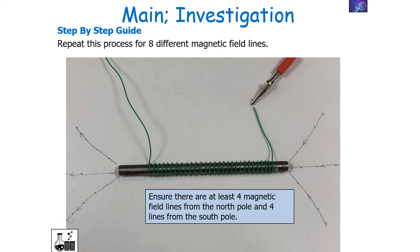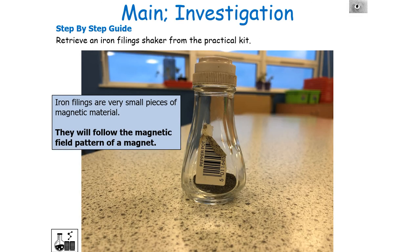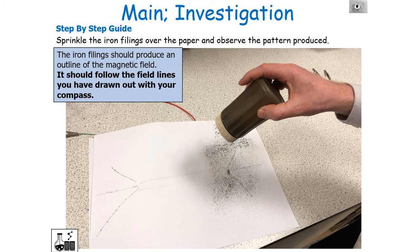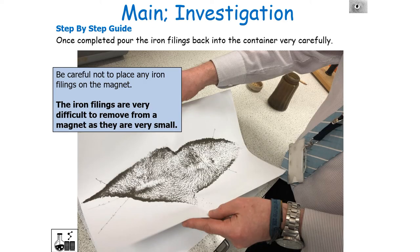You can also verify the field using iron filings. Place your solenoid underneath the outline drawn on your paper, then gently sprinkle iron filings over the outline. If done correctly, the iron filings will follow the field lines you mapped with your compass. Be careful not to place any iron filings directly on the magnet, as they are very difficult to remove being small magnetic particles strongly attracted to the iron magnet.